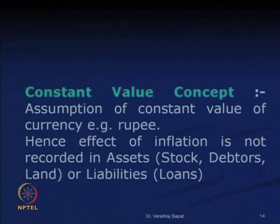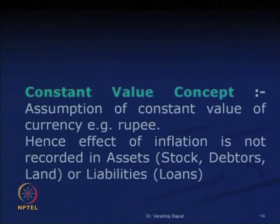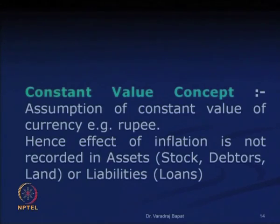The same applies to land — land prices generally rise, but we cannot record that appreciation. In case of liabilities, if you have taken a loan, the absolute amount of repayment remains the same even if its real value is lower, but we cannot show that lower value. We have to show the value as it is in absolute terms.